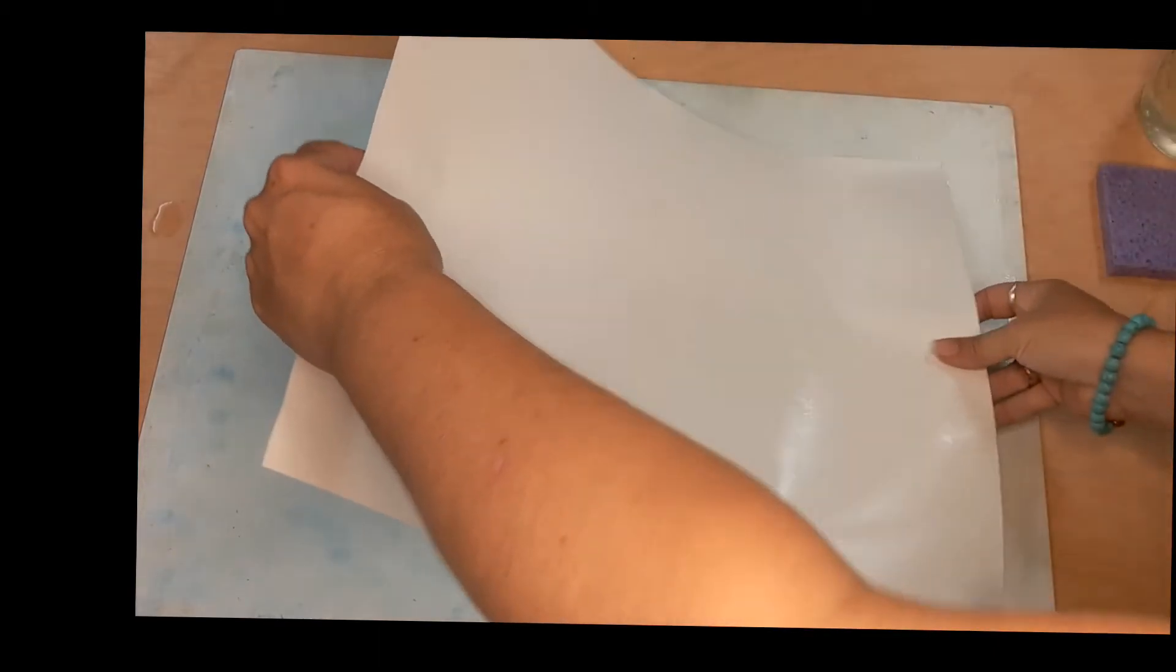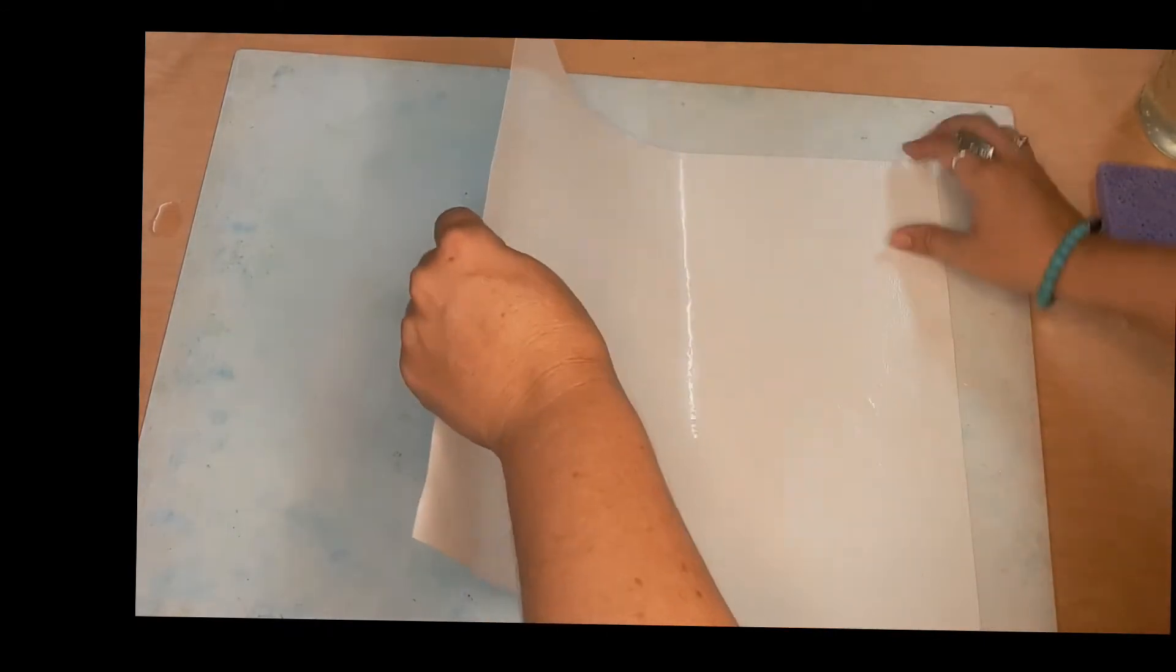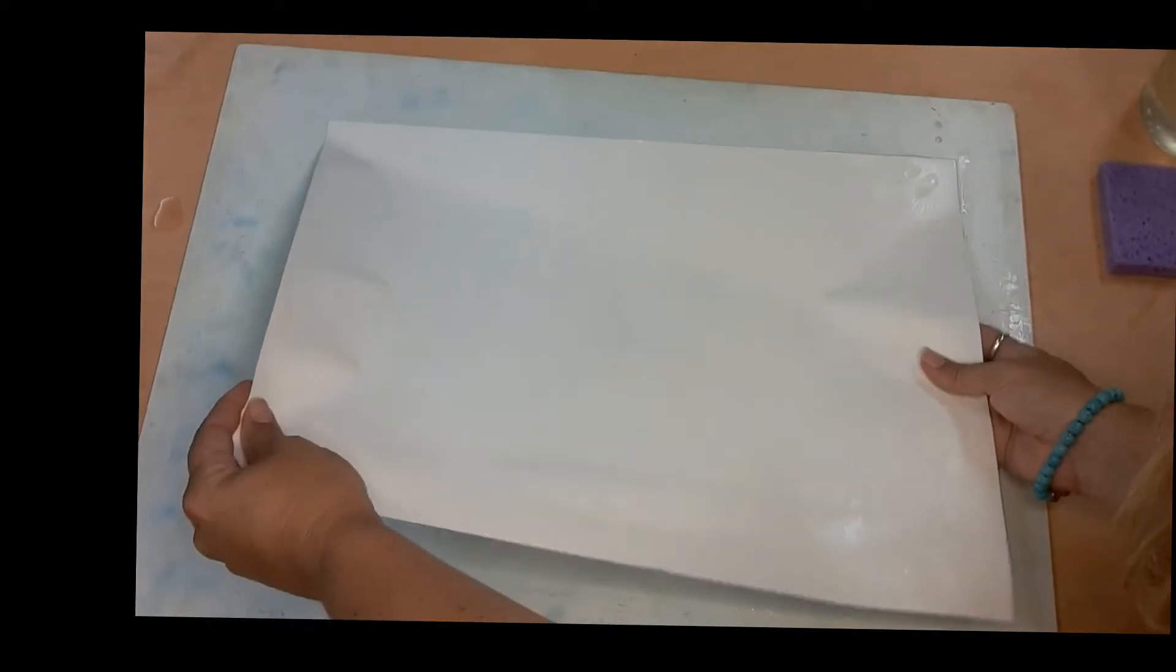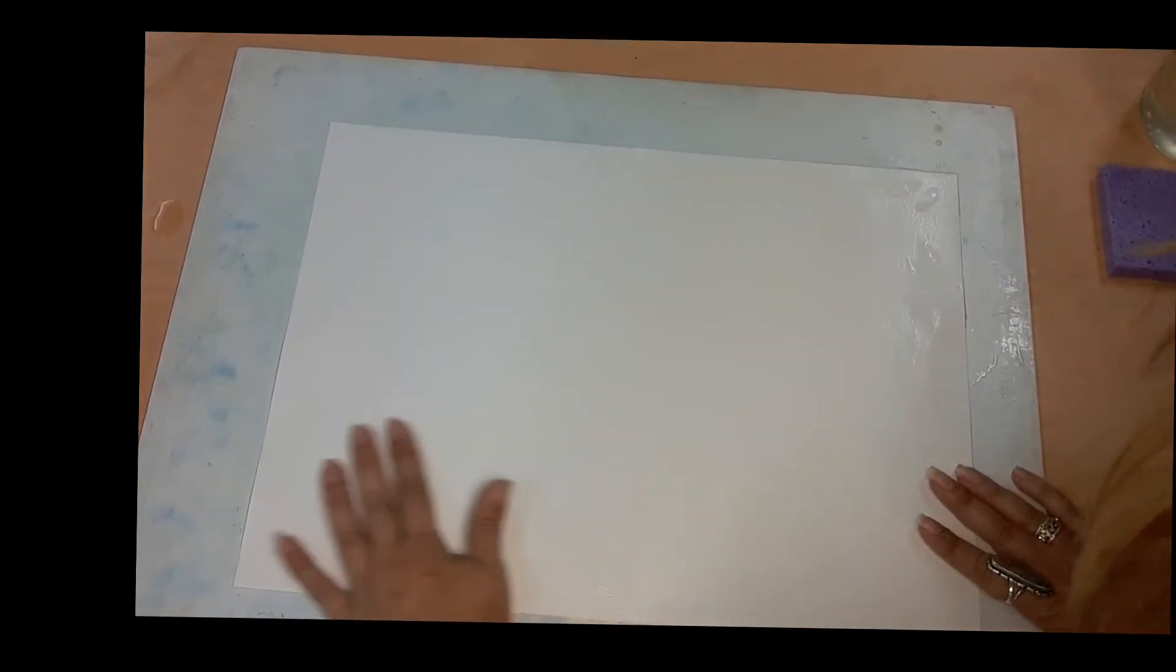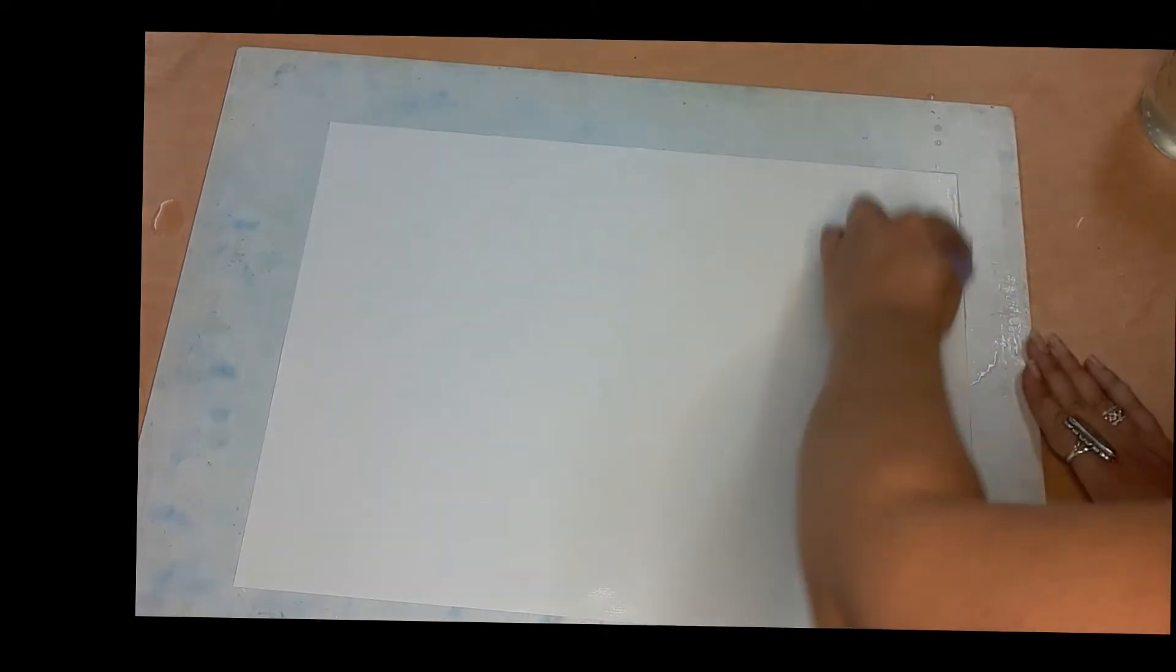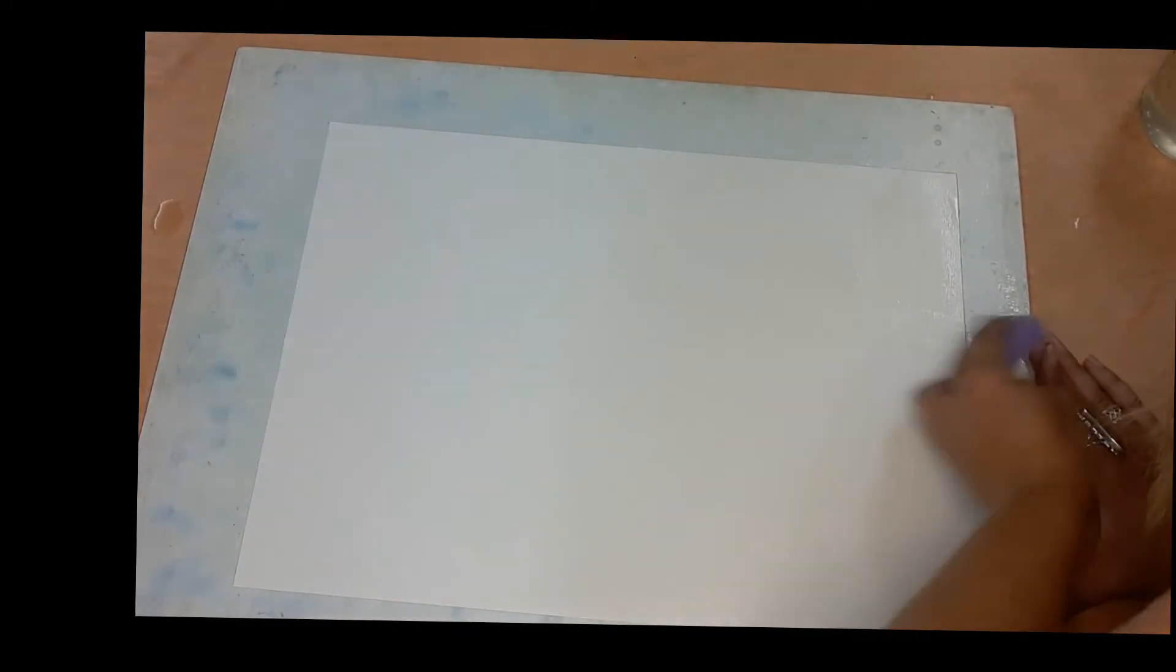Now you're going to get your clean paper and you want to make sure that you have the textured side up and lay it down nice and flat so that there are no bubbles underneath the paper. You want to smooth it out with your sponge and also get all the excess water off your paper at the same time.